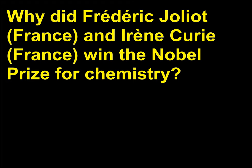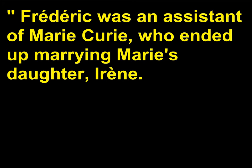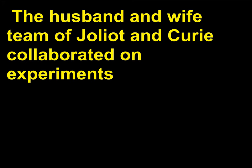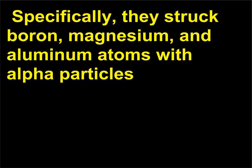For their synthesis of new radioactive elements. Frédéric was an assistant of Marie Curie, who ended up marrying Marie's daughter, Irène. The husband and wife team of Joliot and Curie collaborated on experiments investigating the effect of bombarding atoms with other particles. Specifically, they struck boron, magnesium, and aluminum atoms with alpha particles (He2+ ions), creating new short-lived radioactive particles.